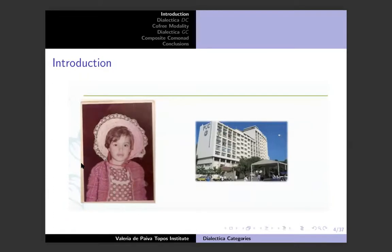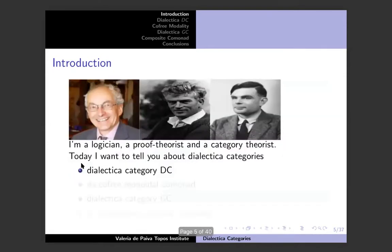For people who don't know me — the students didn't — that's me as a little girl in Brazil, and that's the Pontifical Catholic University of Rio where I come from. These are people in my mathematical genealogy. The person to the left is Martin Hyland, who was my supervisor, and the person to the right is Alan Turing. I hope everyone recognizes his face.